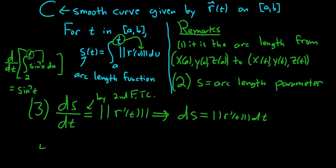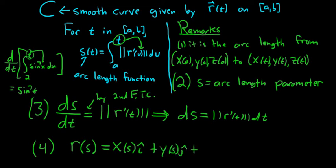So, what is this for? Well, here's the kicker. We can rewrite things as follows. We can write r as a function of s. And that would be x(s)î + y(s)ĵ + z(s)k̂. You might say, what in the world are we doing? Well, now we have our vector value function defined in terms of s instead of t.